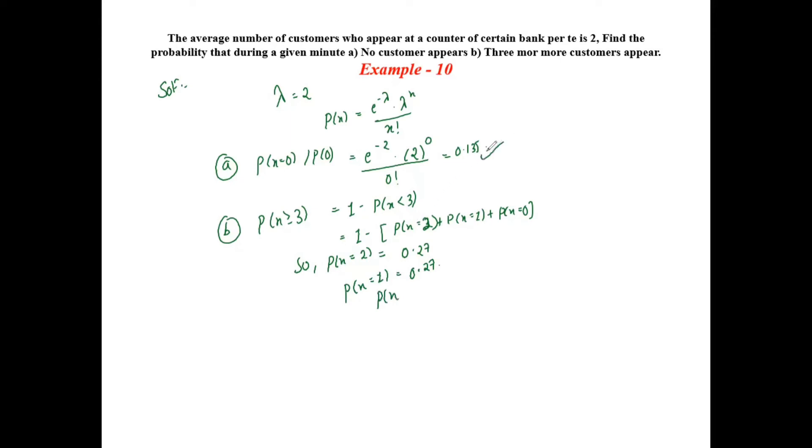P(X equals 0) is 0.135. After you sum up, we will get the answer of P(X is less than 3), which is 0.675. So probability X is greater than or equal to 3 is equal to 1 minus probability X less than 3.